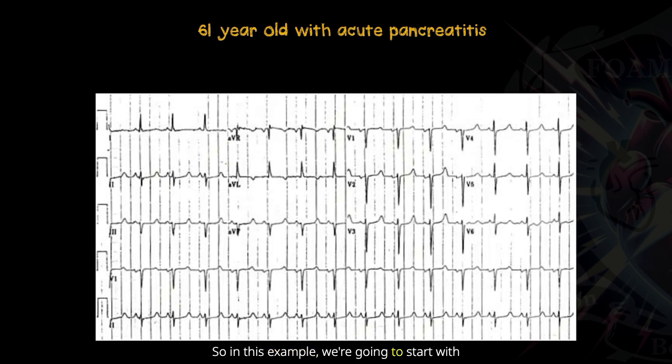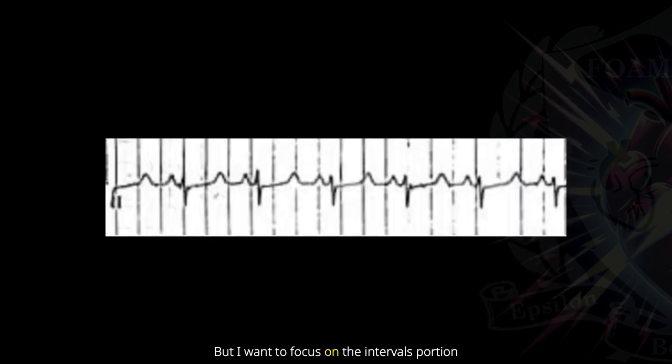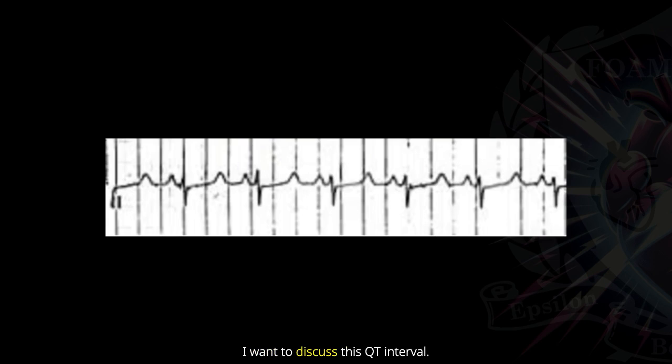In this example, we're going to start with a 61-year-old male with acute pancreatitis. I want you to go through your normal rate, rhythm, axis, intervals, or whatever methodology you use to go through 12 leads. But I want to focus on the intervals portion of this, and we're going to zoom in a little bit to discuss this QT interval.